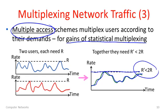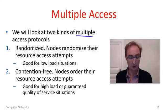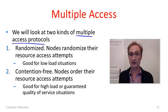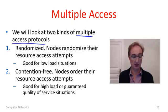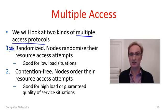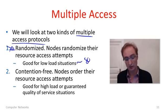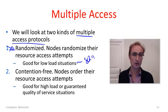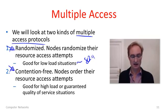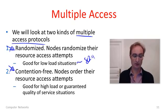TDM and FDM don't achieve this. Instead, multiple access protocols share this link by dynamically dividing the bandwidth over time. We're going to look at two families of multiple access protocols in the next videos. One is randomized multiple access protocols, where nodes randomize their attempts to access the medium whenever they've got something to send — this is good for low load situations and is what's used for Wi-Fi 802.11. The alternative is contention-free multiple access protocols, where nodes take turns in a well-defined order to access the medium, which is better where you need more control over quality of service.